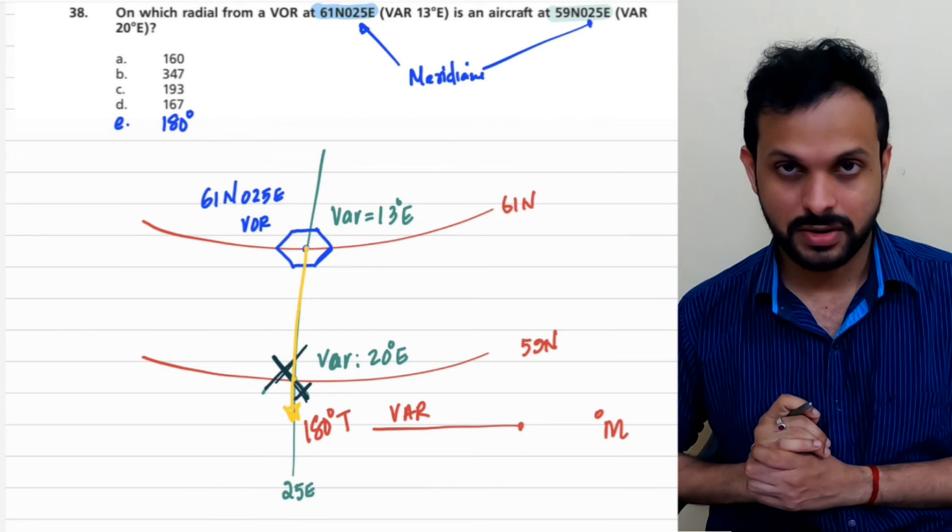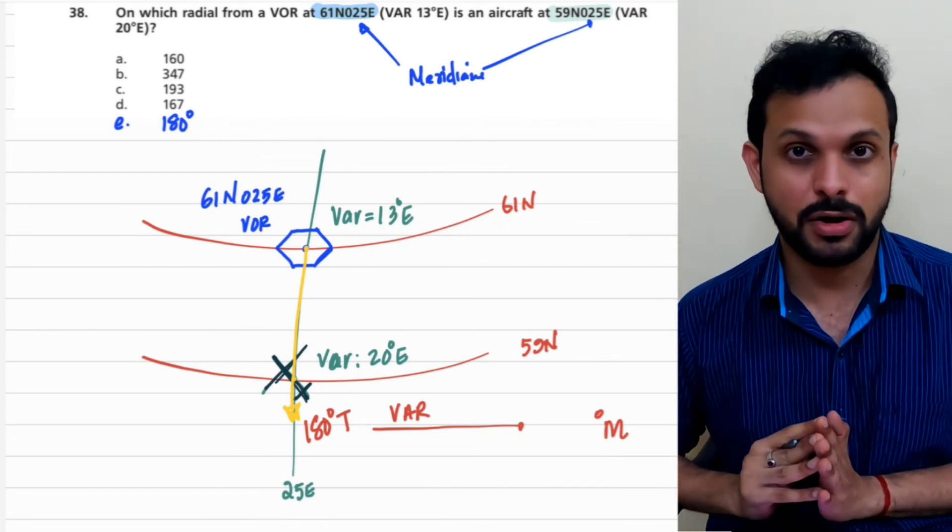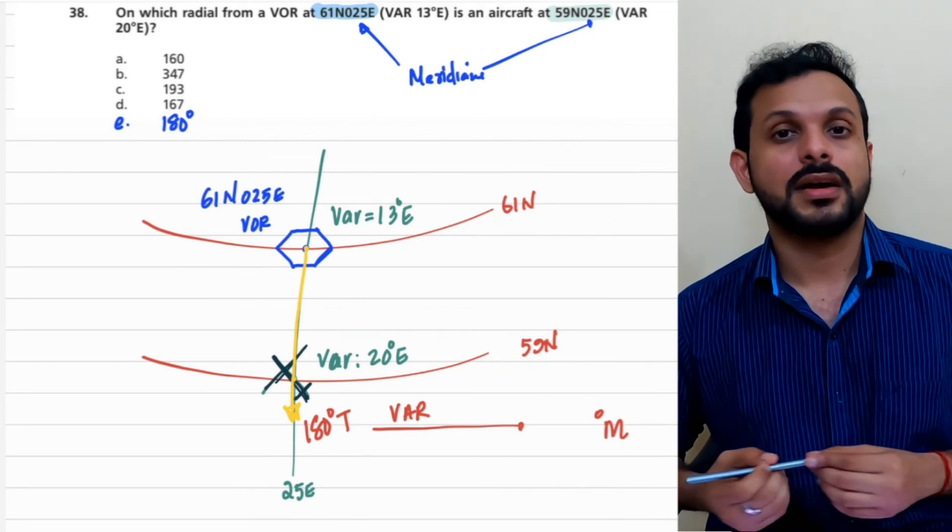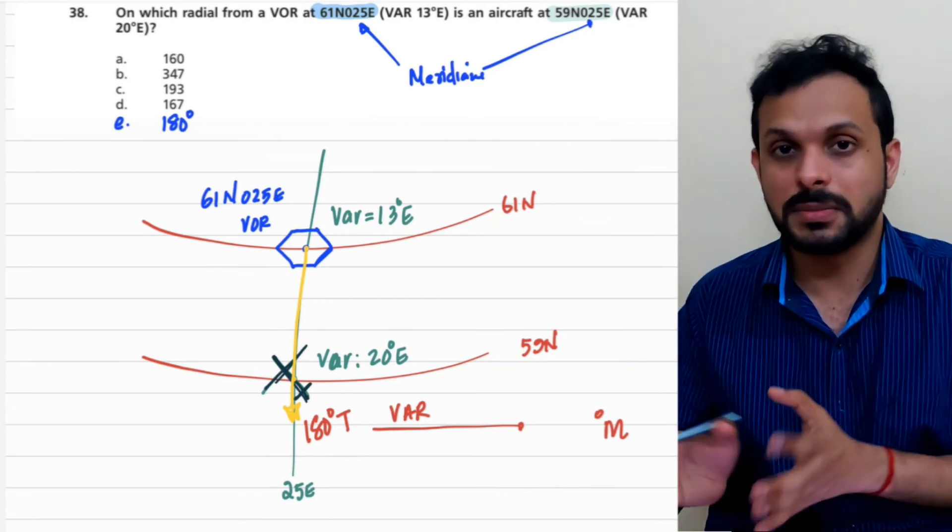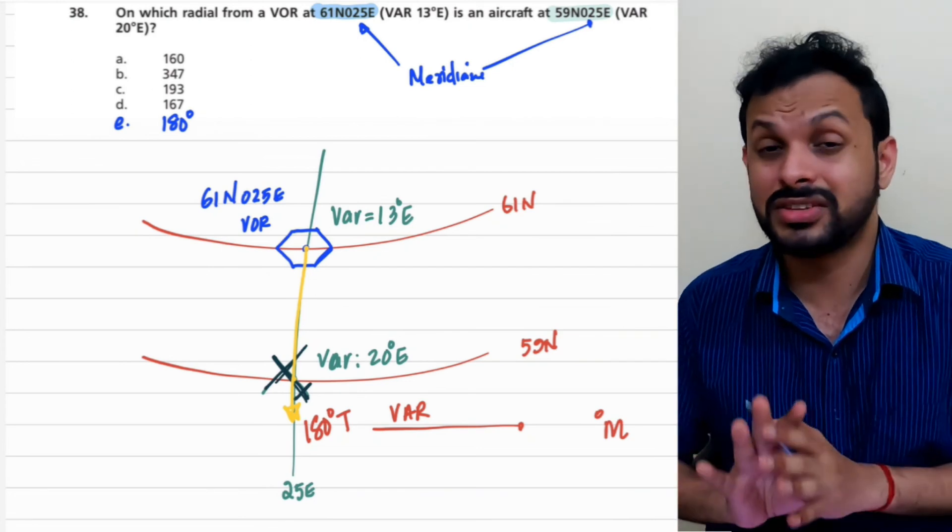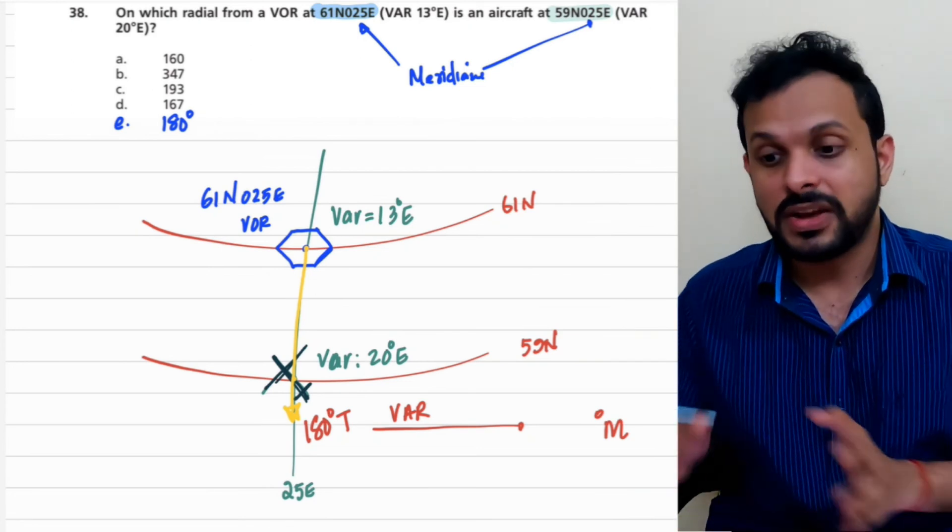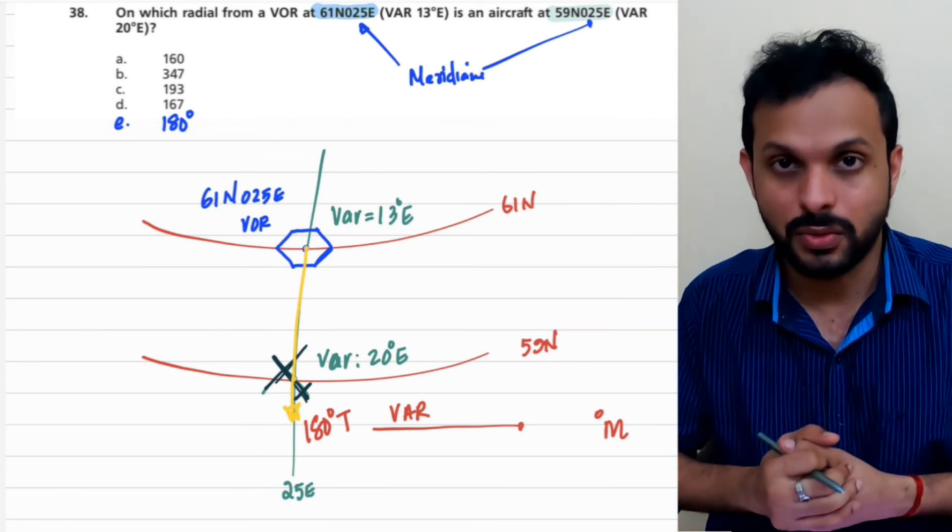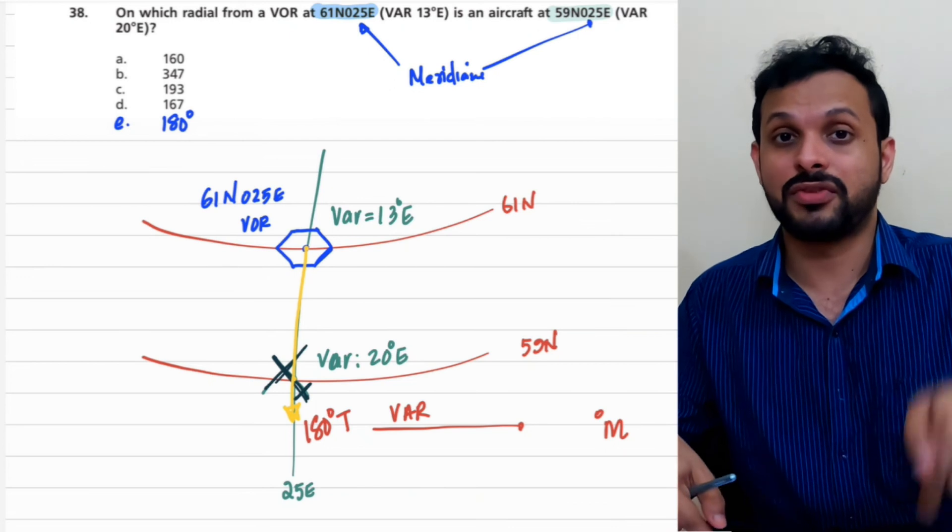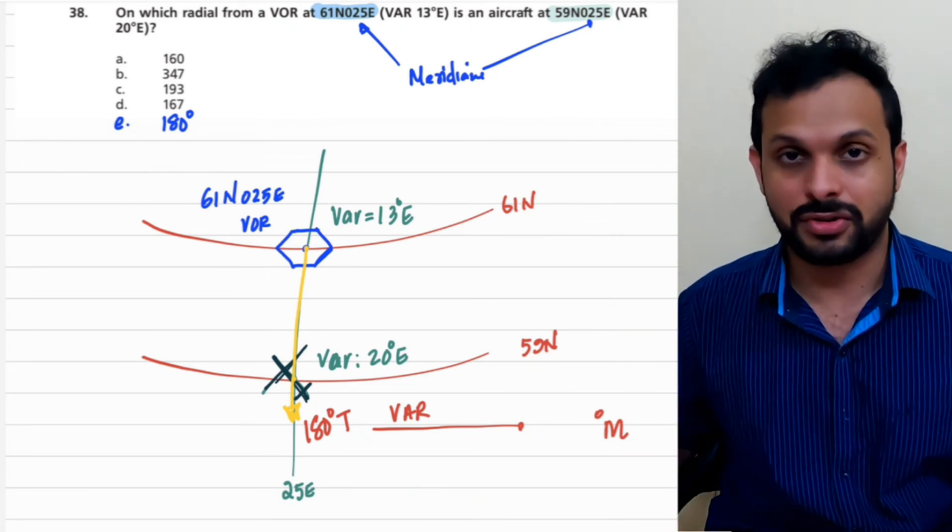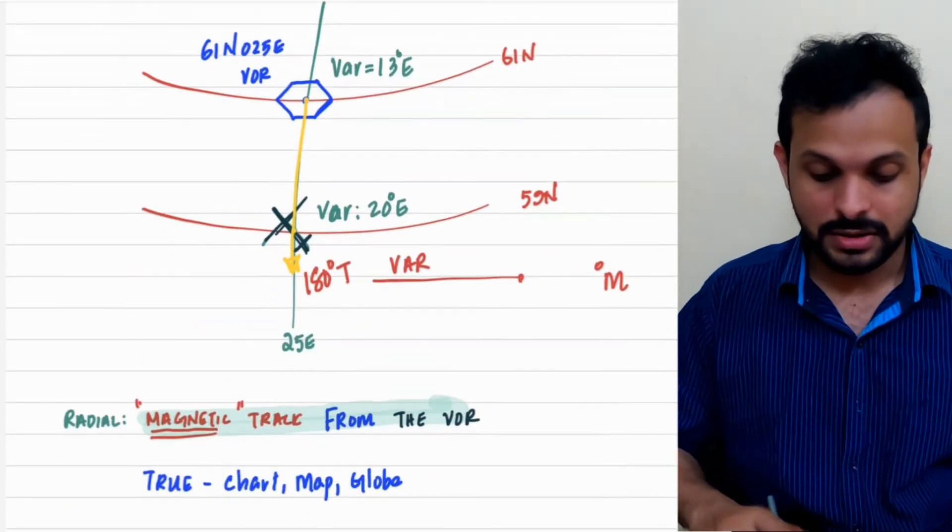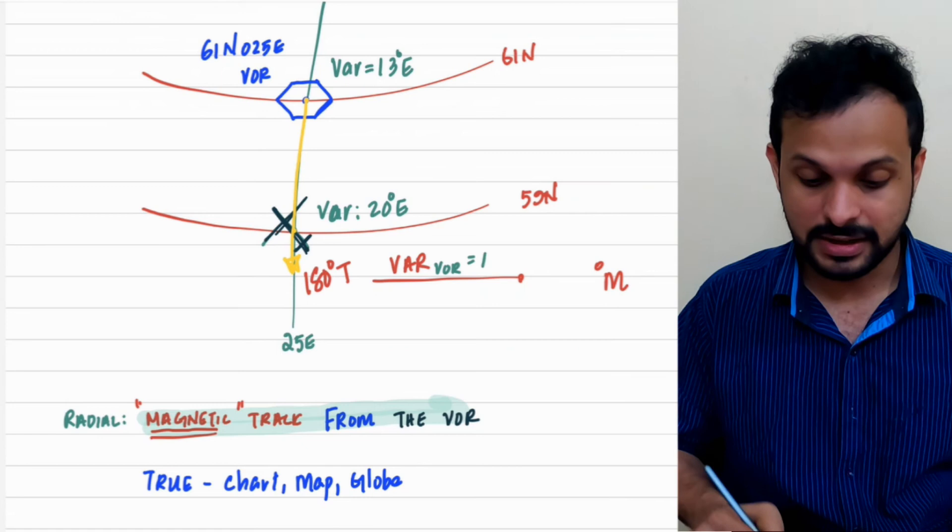So here you have two different variations. The question is which variation should I take now. Now let me make it very simple here. I'm not trying to explain a lot about it. The variation in such scenarios is always taken at the VOR. And the reason for that is: on which radial would the aircraft be on is determined at the VOR station itself using the phase differences between the reference signal and the variable signal. What the aircraft receiver does is just measuring that phase difference. The phase difference is actually constructed right at the VOR station on the ground. Therefore in case of VOR systems, variation at the VOR. So it's V for V. So variation at the VOR station, and that is 13 degrees east.